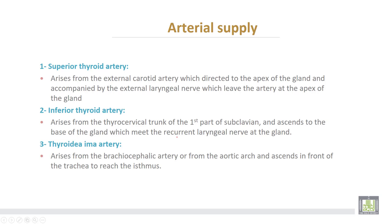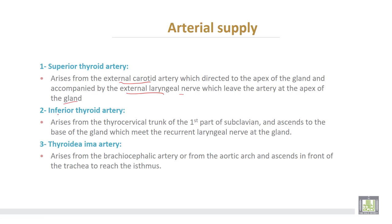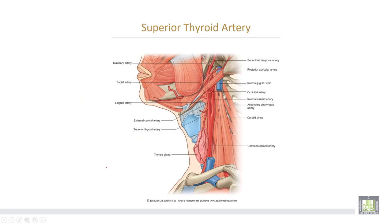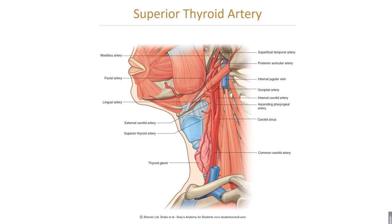Arterial supply of the gland: the superior thyroid artery arises from the external carotid artery, directed to the apex of the gland and accompanied by the external laryngeal nerve, which leaves the artery at the apex of the gland. The second is the inferior thyroid artery, which arises from the thyrocervical trunk of the first part of the subclavian artery. It ascends to the base of the gland, where it meets the recurrent laryngeal nerve.